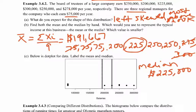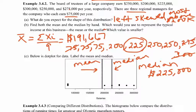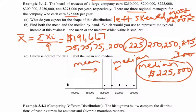Which value would you use to represent the typical income at this business? The median — it's $225,000. The mean is $191,667. The median is the higher number this time, and the mean is pulled down because the graph is left-skewed. The median better represents the data because the graph is skewed. In a left-skewed graph, the mean is lower than the median — the opposite of a right-skewed graph where the mean is higher.